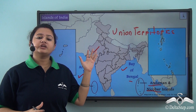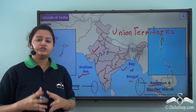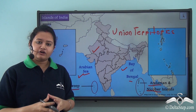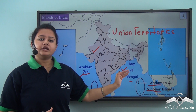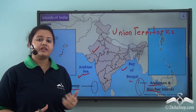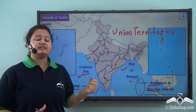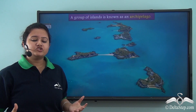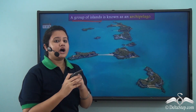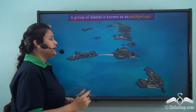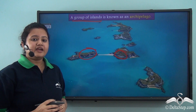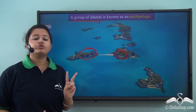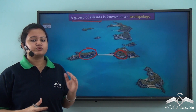A union territory refers to a geographical or political unit that is administered by the central government and does not have any state government. So Lakshadweep and Andaman and Nicobar Islands are important union territories of India. Geographically, these islands are an archipelago. An archipelago refers to a group of islands. Since Andaman and Nicobar Islands and Lakshadweep consist of several small islands, they are each considered an archipelago.